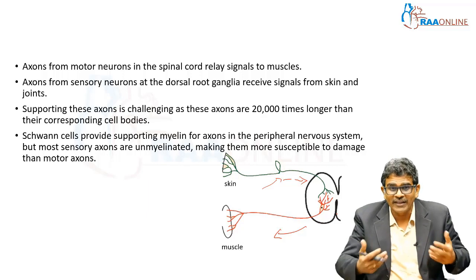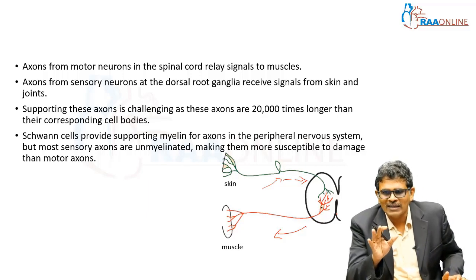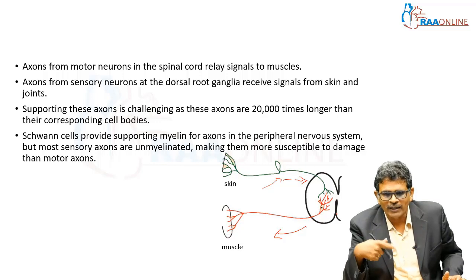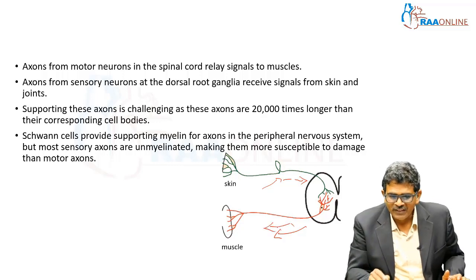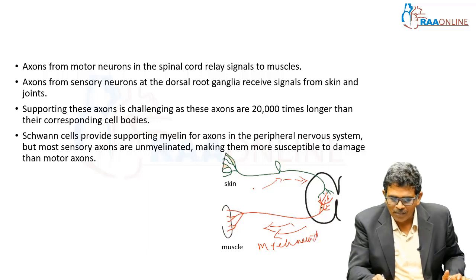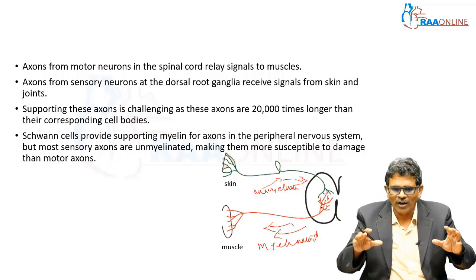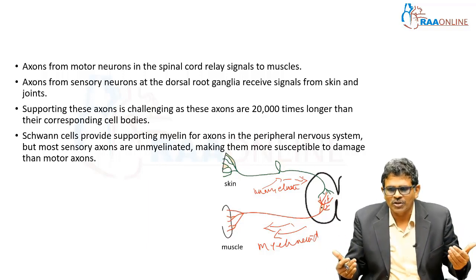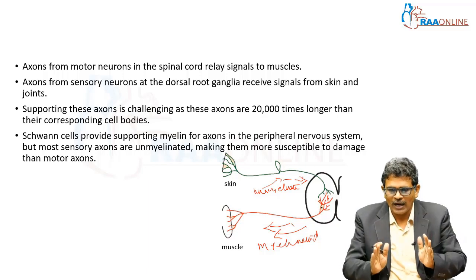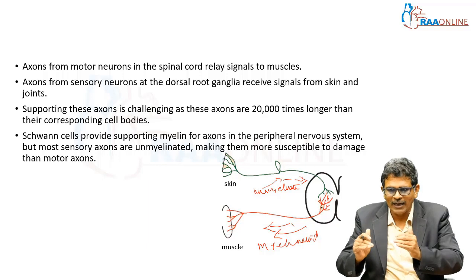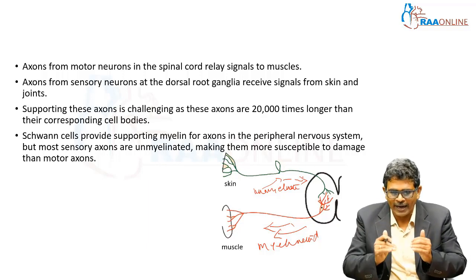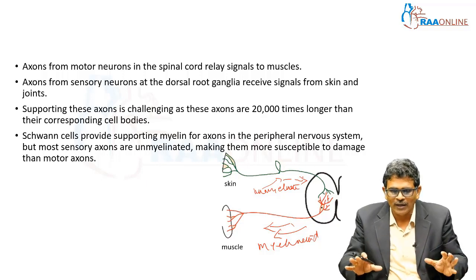Supporting these long axons is very challenging. Schwann cells provide the supporting myelin for axons in the peripheral nervous system, but most sensory axons are unmyelinated. This is a very important point we will repeat several times in this module. Motor axons carrying motor signals are myelinated, whereas the sensory axons are unmyelinated. Because they lack the myelin covering, unmyelinated sensory axons are more susceptible to damage than motor axons and are the first ones to get affected.